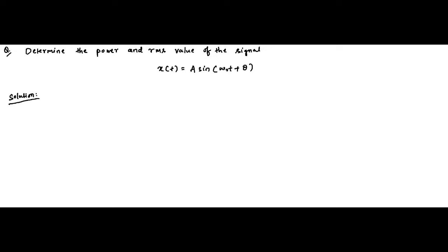Hello friends, welcome to engineering tutorial. We will continue our discussion related to classification of signals. In the previous few videos we discussed some questions related to periodic and non-periodic signals. In the next series of videos we will be discussing some questions on energy and power signals. This is the first question: determine the power and RMS value of the signal x(t) = A·sin(ω₀t + θ), where A is the amplitude, ω₀ is the angular frequency, and θ is the initial phase.